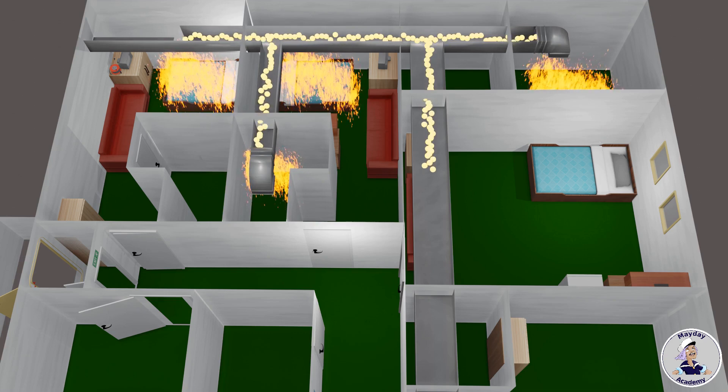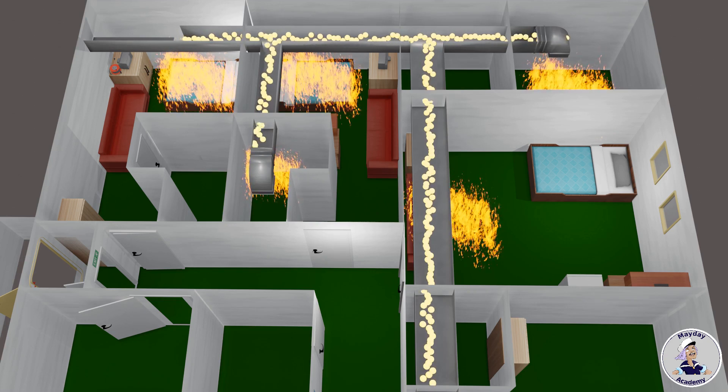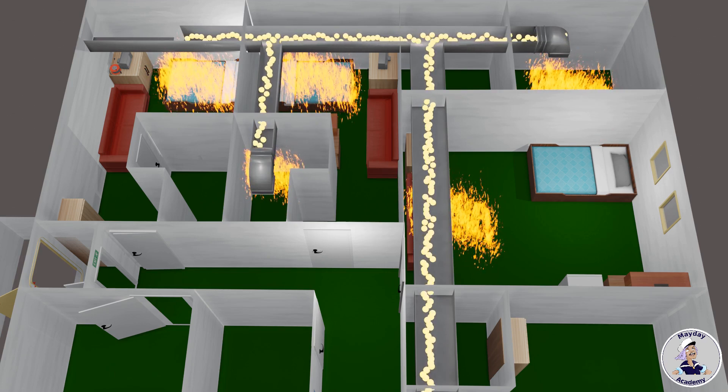That is where the fire flaps and dampers come in. These components are strategically placed within the ventilation ducts and bulkheads to prevent the fire from spreading to other compartments.